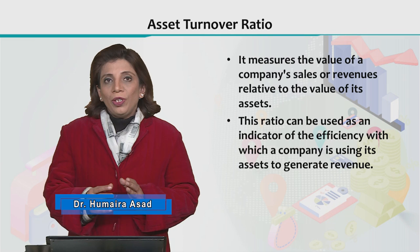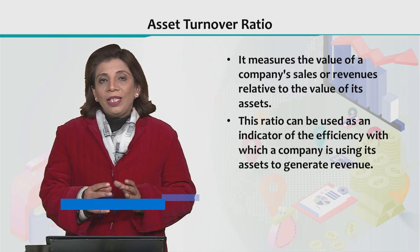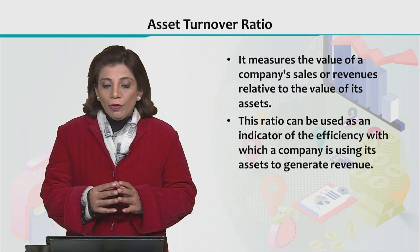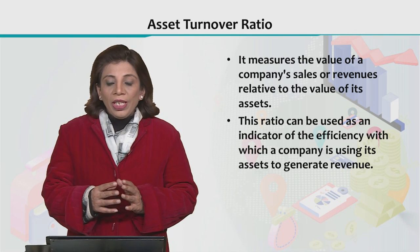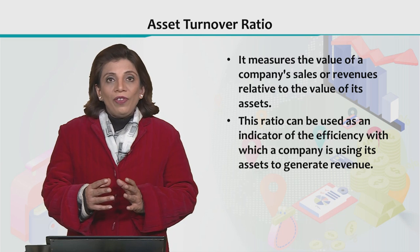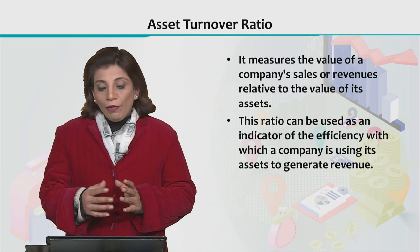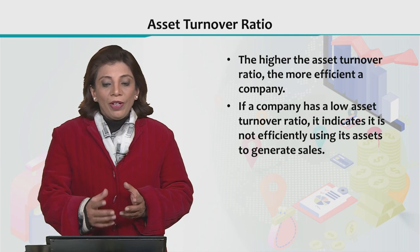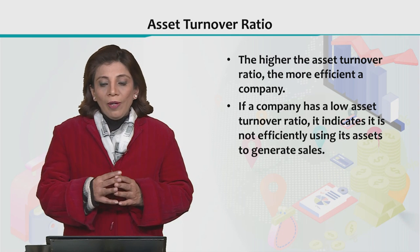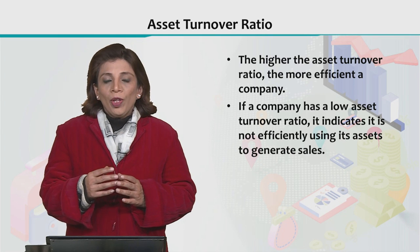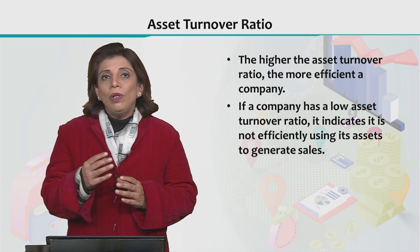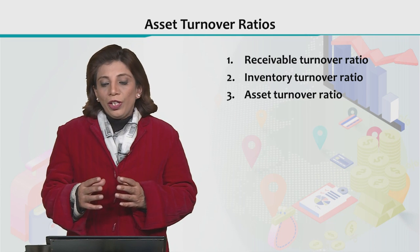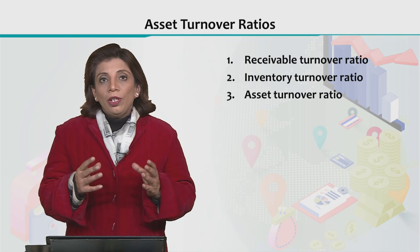These types of ratios give you information or understanding from a different perspective. The first thing we are going to discuss in this module is the concept of asset turnover ratio. It basically measures the value of a company's sales or revenues in terms of the value of its assets. This ratio can be used as an indicator of the overall efficiency with which a company is operating and utilizing its assets in order to generate revenues. Three types of asset turnover ratios we consider in our analysis.